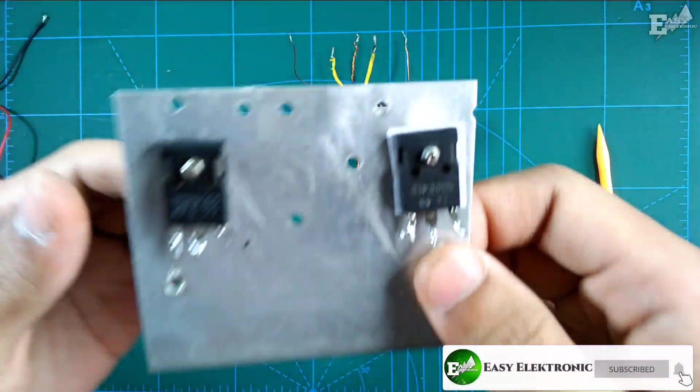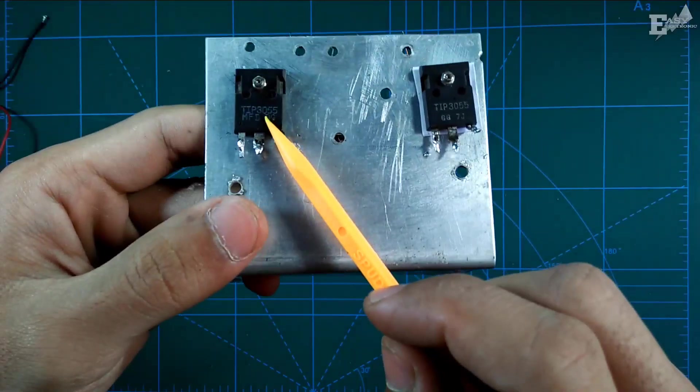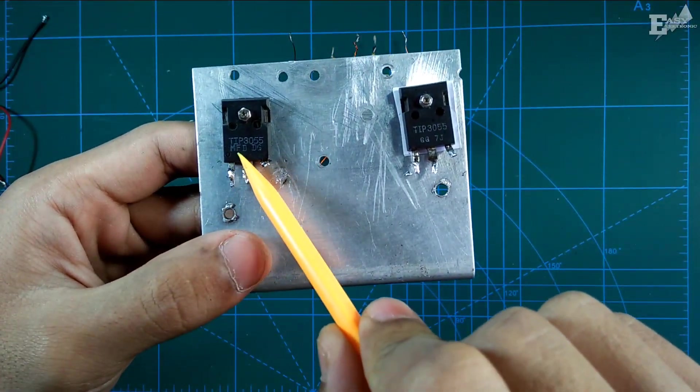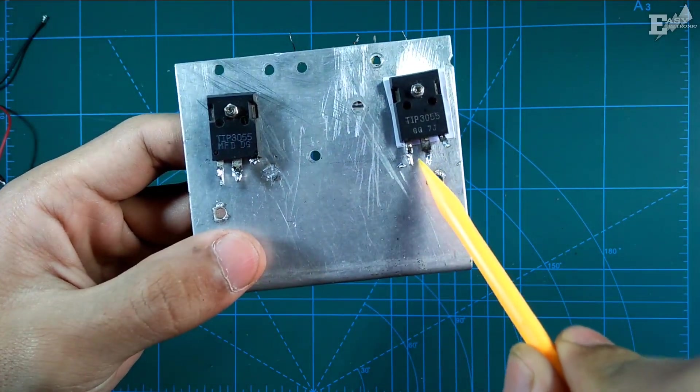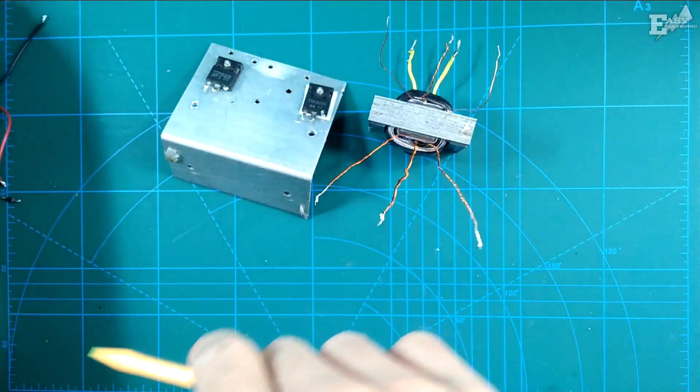Okay, let's get straight to it. The materials needed, number one, is this TIP-3055 transistor. Because this is just for tutorial purposes, I'm using this type, 3055.